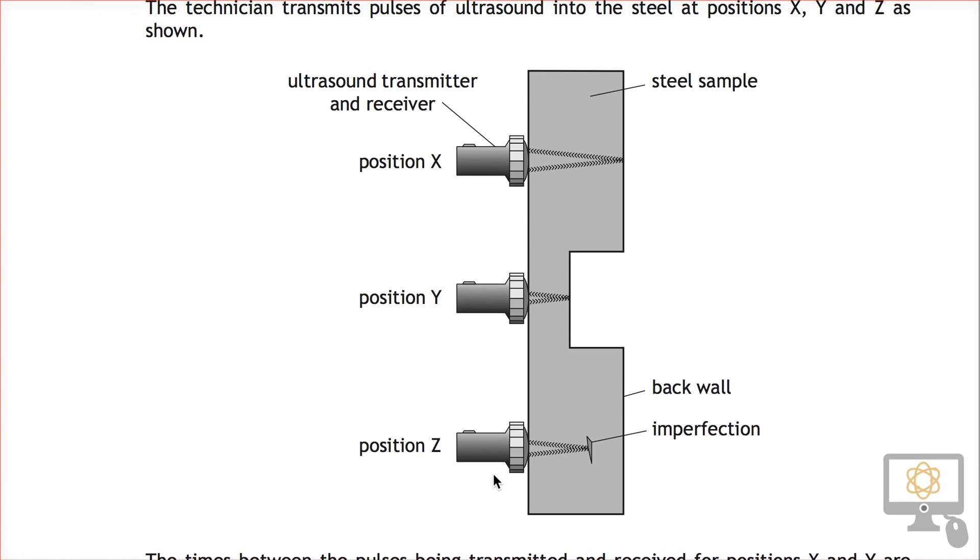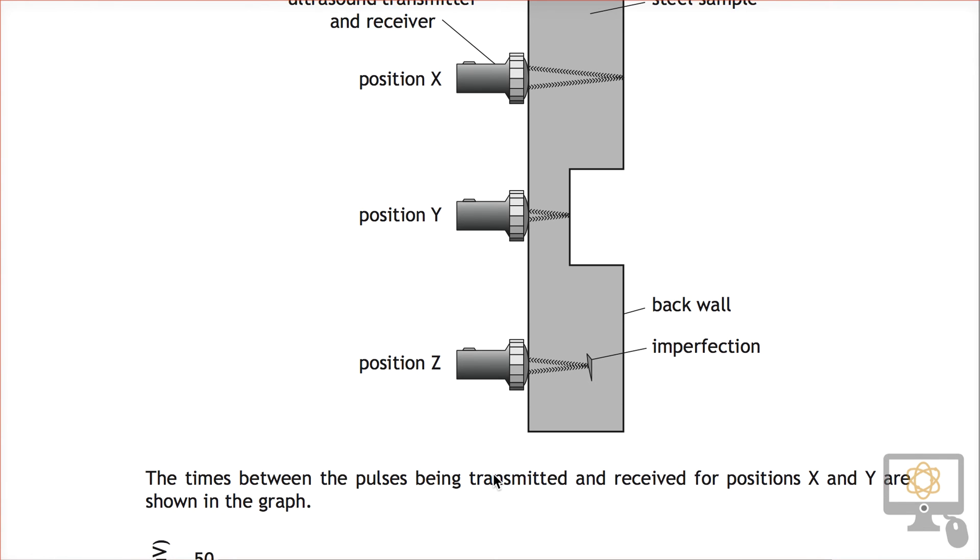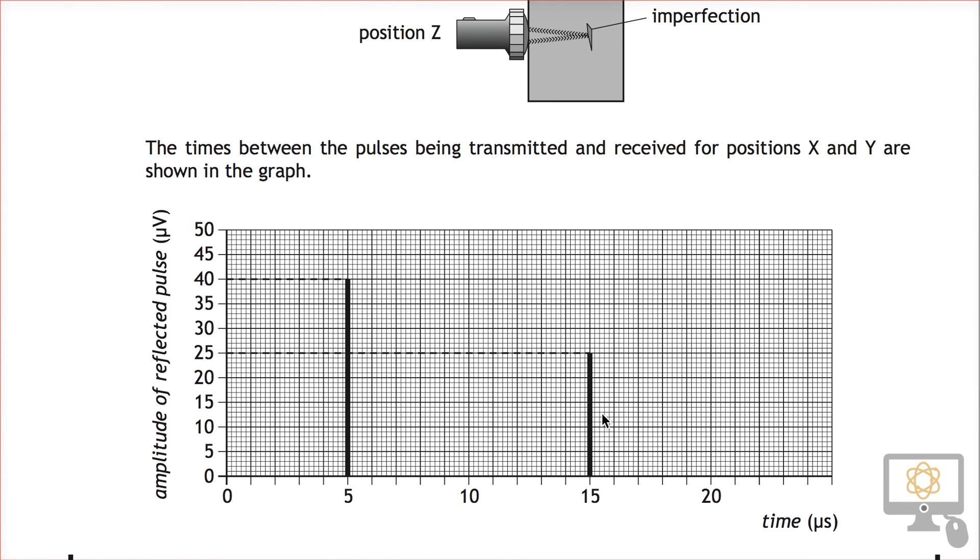So let's have a recap on this again. Remember what we discovered earlier in the previous videos: position x, the signal took a long time to get through because it had to travel farther and it's also weaker because some of that signal has been absorbed. So position x was this one down here, the 15 microsecond one.